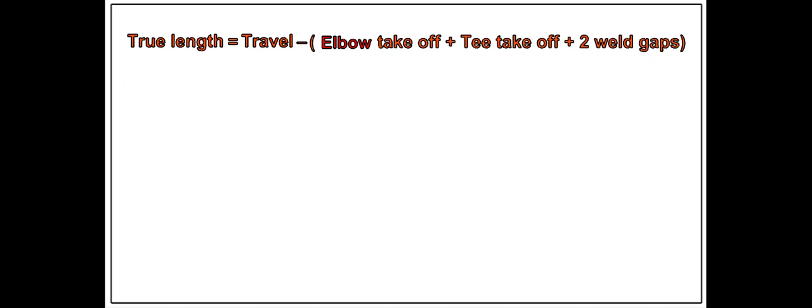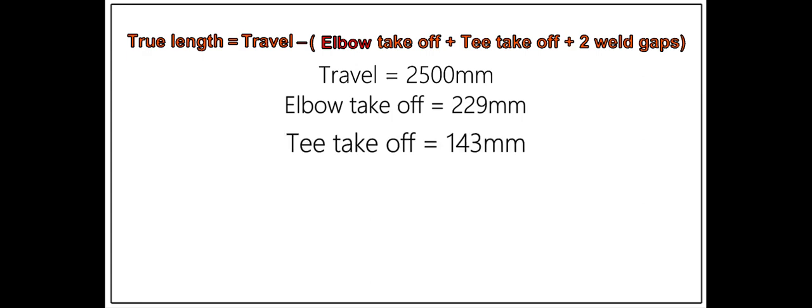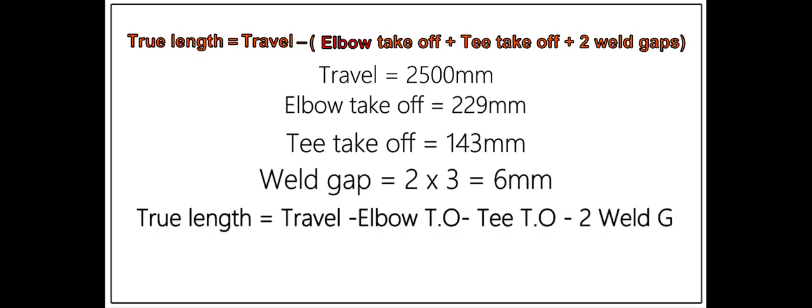We have all the required dimensions now. Deduct the takeoff of the tee and the elbow and two weld gaps from the travel length. The travel length is 2500 millimeters. Elbow takeoff equals 229 millimeters. Tee takeoff equals 143 millimeters. Two weld gaps equals 6 millimeters. Let us apply the formula.